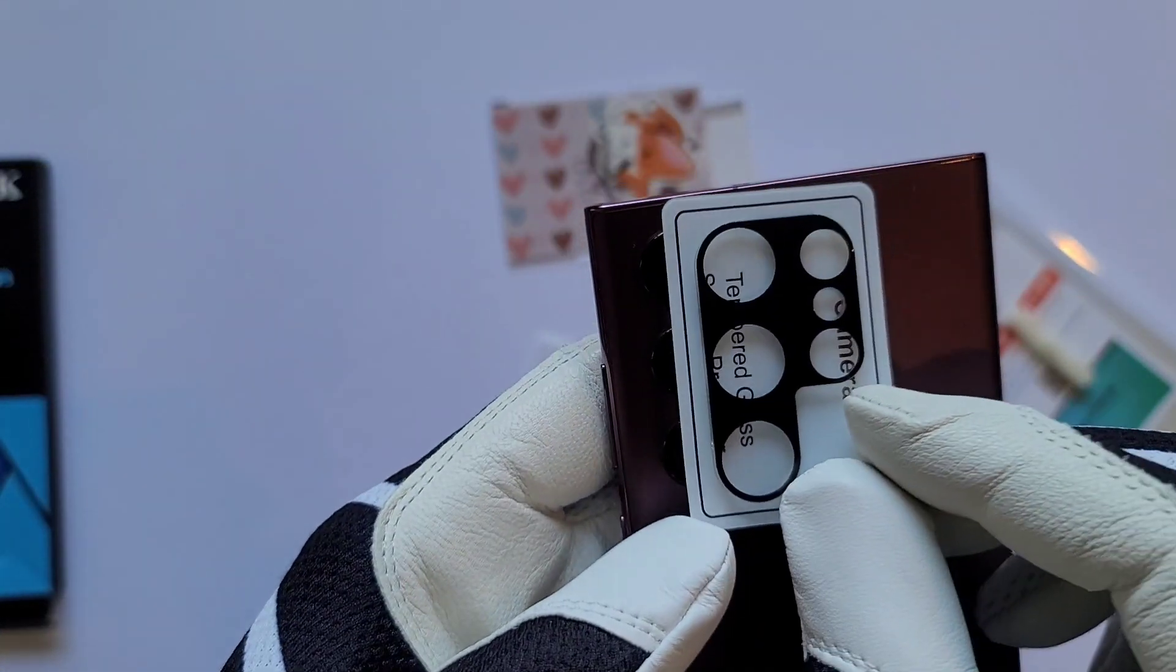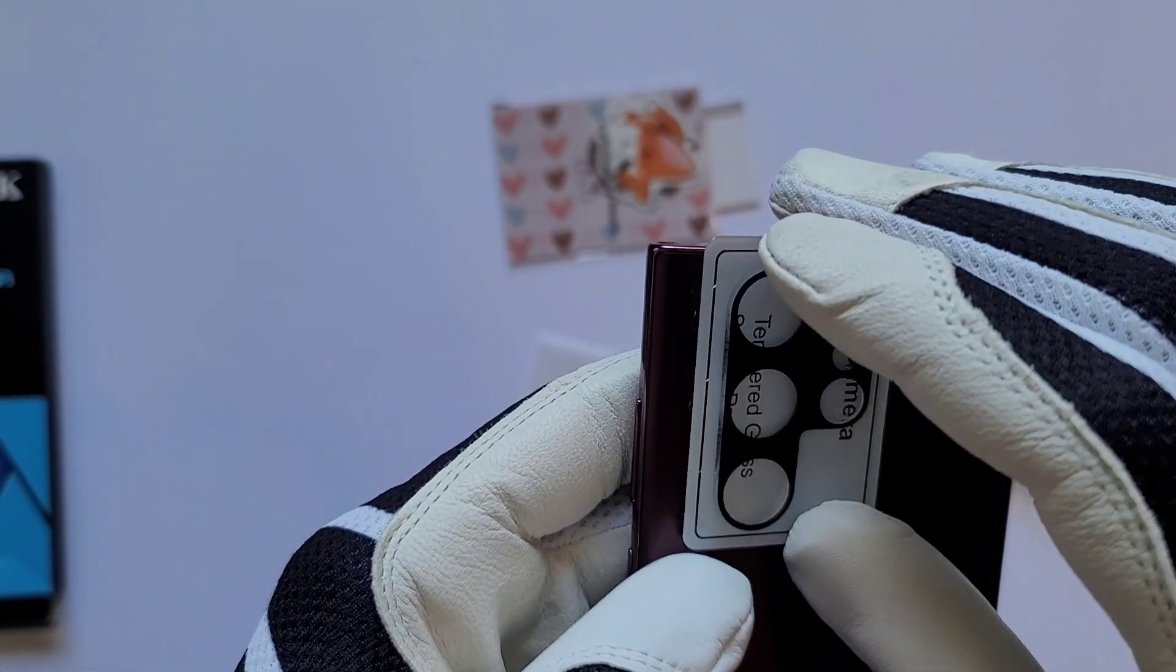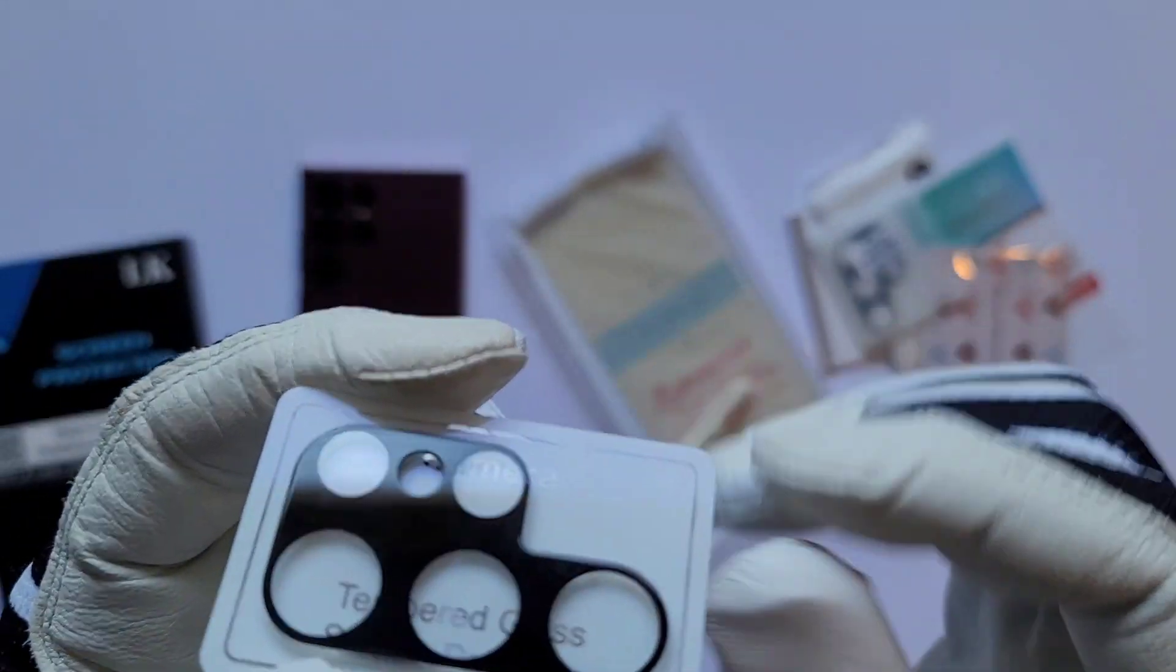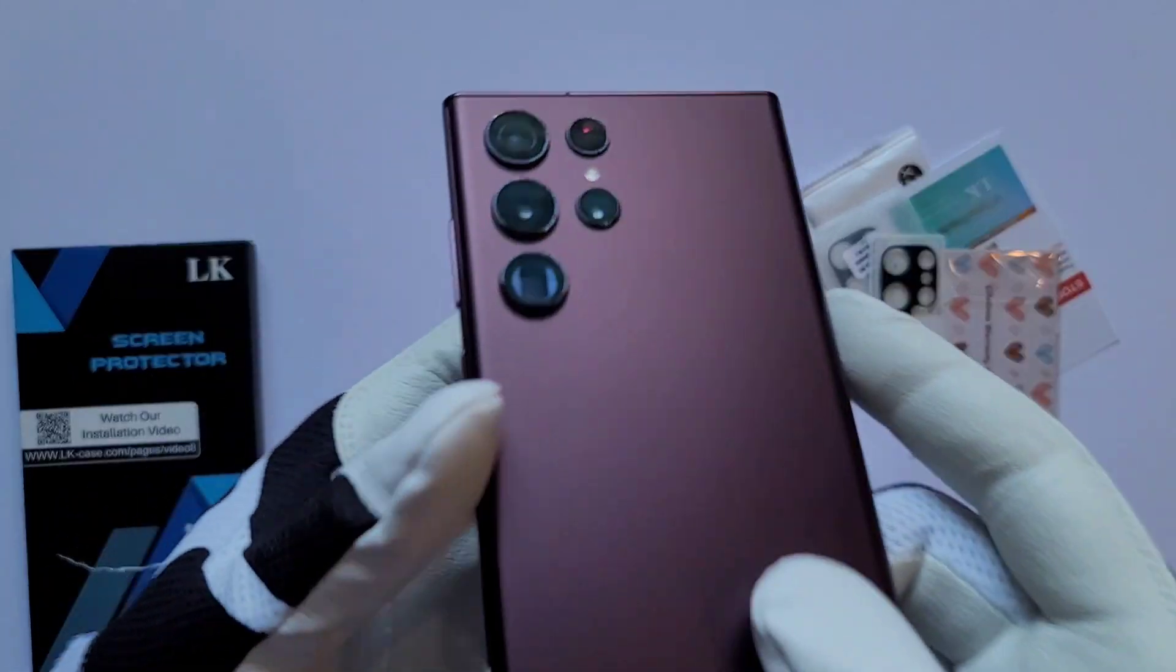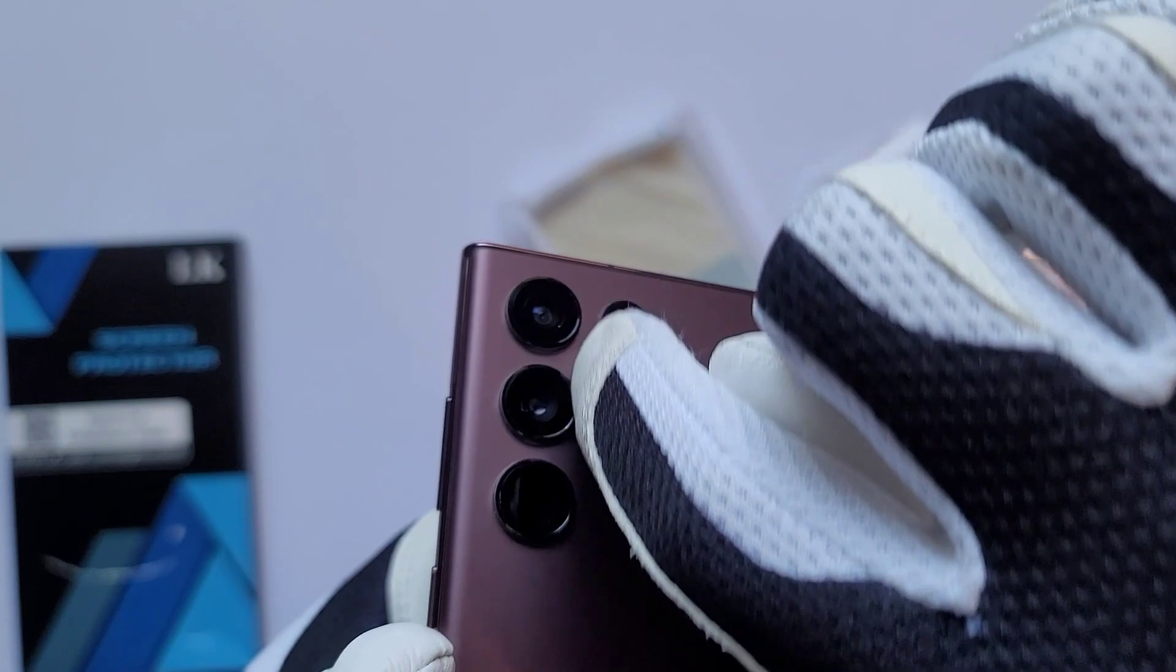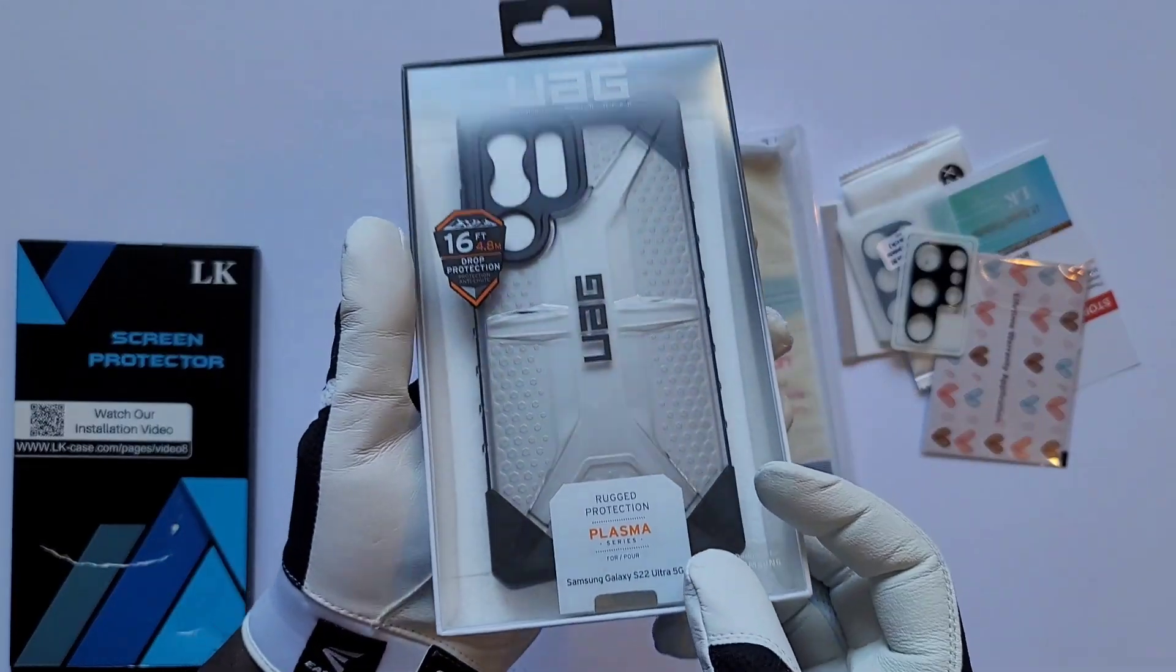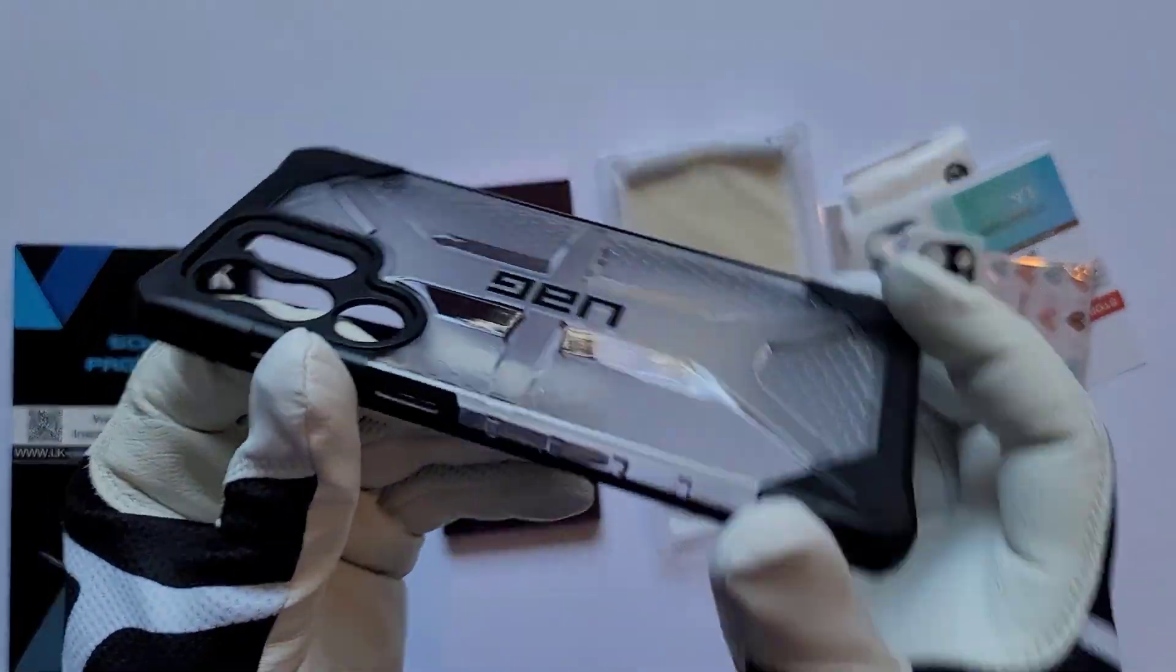Before we begin, let's talk about the camera lens protector. This one is made of tempered glass. I will not be putting it on this phone because I have cases that do not allow the usage of this camera lens protector. Most of the cases that I have protect each camera lens individually, and this camera lens does not work with them. Allow me to elaborate.